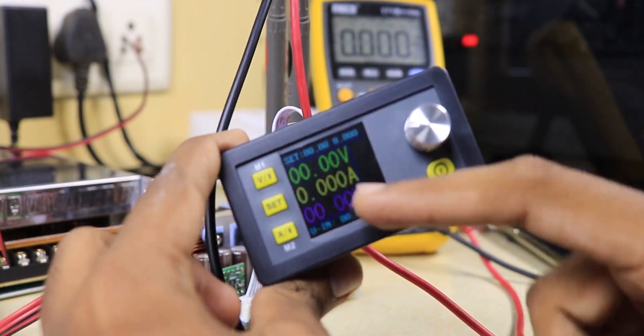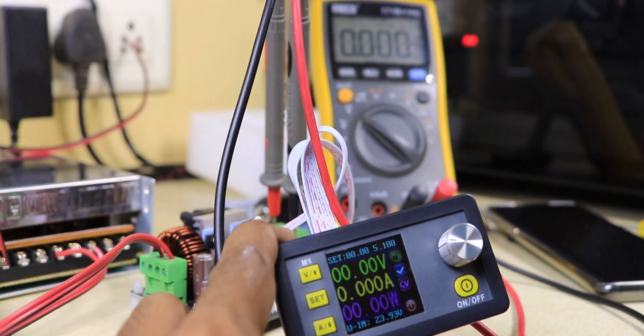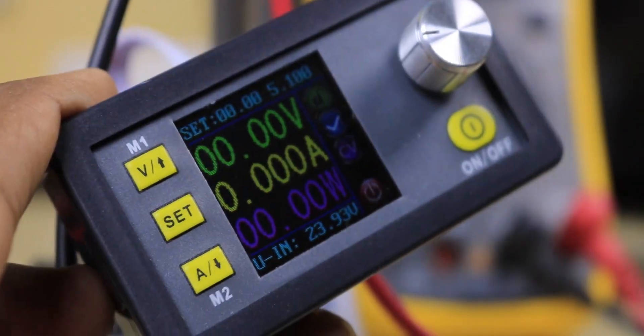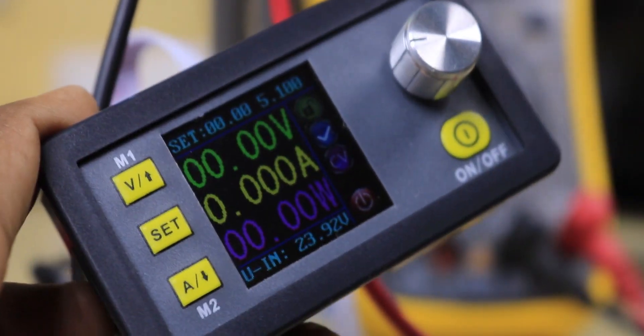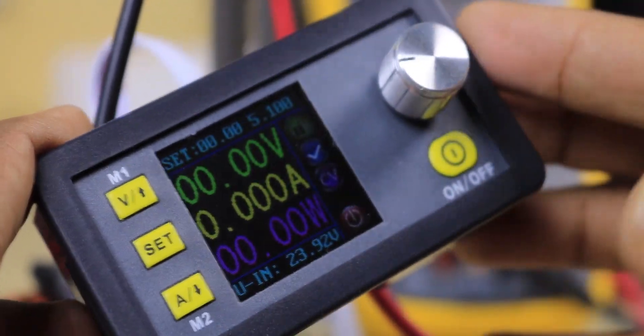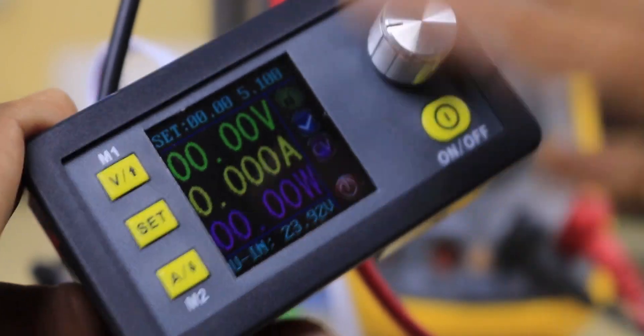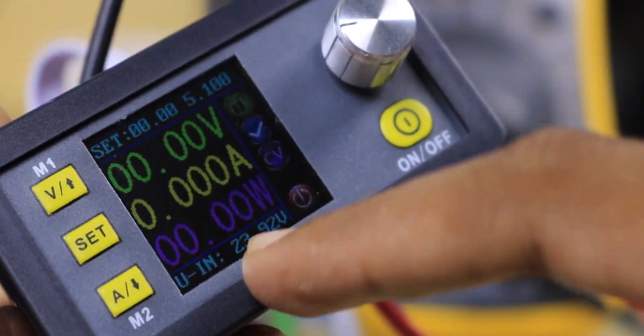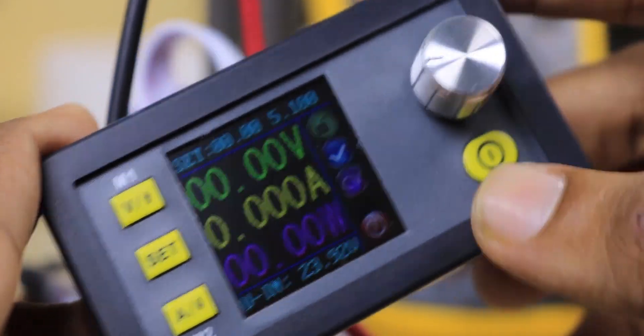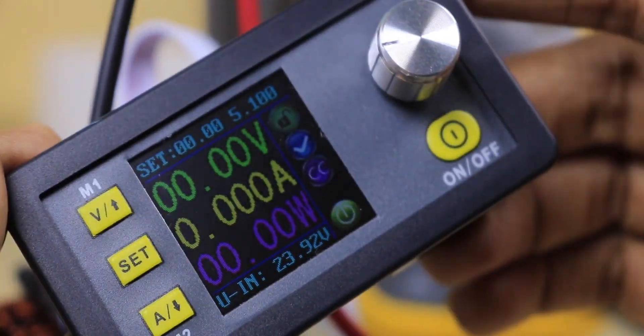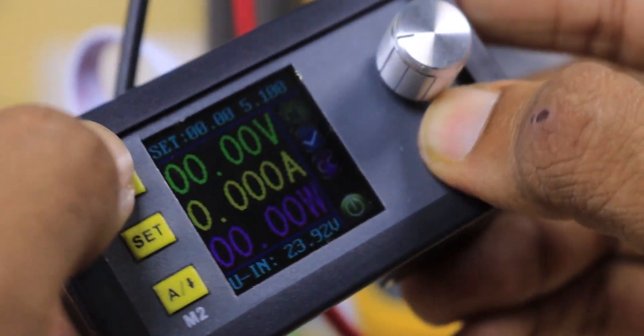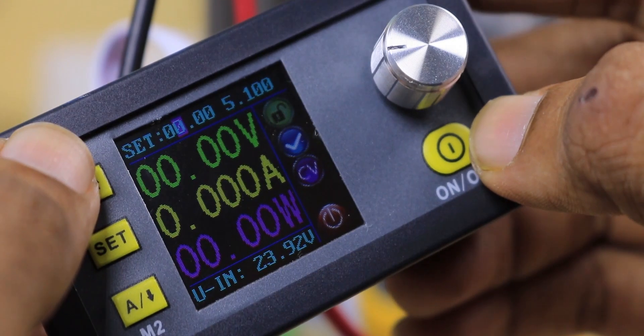There's the logo and the noise you hear is from the fan. The display is not the brightest I've seen but can get the job done. We can see the input voltage we're giving this module, which is about 24 volts. Right now the power supply is turned off. We can turn it on using this button and it turns green. To set the voltage we have this button.